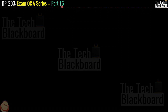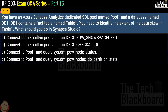Let's begin part 16 with question number 187. You have an Azure Synapse Analytics dedicated SQL pool named pool 1 and a database named db1. db1 contains a fact table named table 1. You need to identify the extent of the data skew in table 1. What should you do in Synapse Studio?